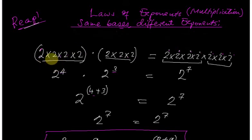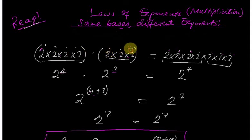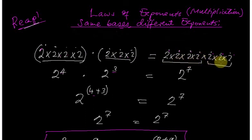When we have to multiply the same base many times — suppose you multiply two times two times two times two: that's four times. Then two times two times two: that's three times. These are two groups. When we combine them, we have two multiplied seven times.